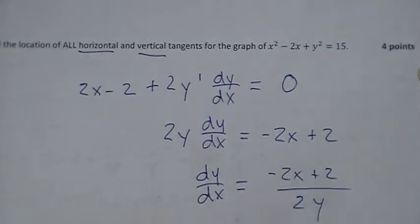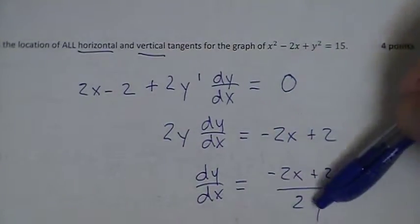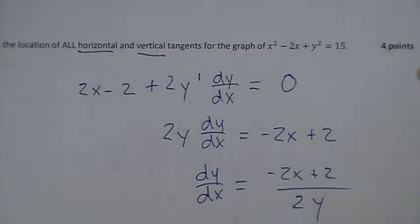You can simplify this a little bit if you want to. You can factor a 2 out from the top, 2 from the bottom, and cancel your 2s. You can leave it like this. Both will get you to the proper end result as long as you're careful. I'm just going to leave it in this form.